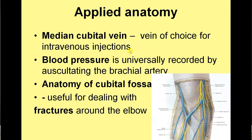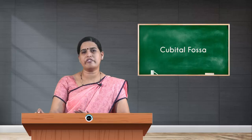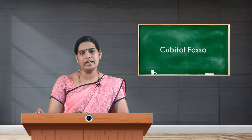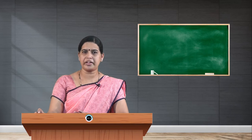For applied aspects: the median cubital vein is the vein of choice for intravenous injections, and the brachial artery is the artery universally used for recording blood pressure. Understanding the anatomy of the cubital fossa is very important in dealing with fractures around the elbow.